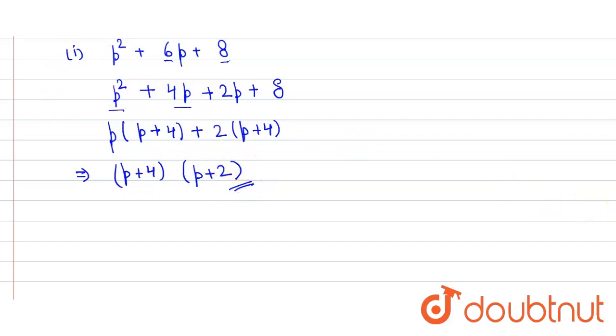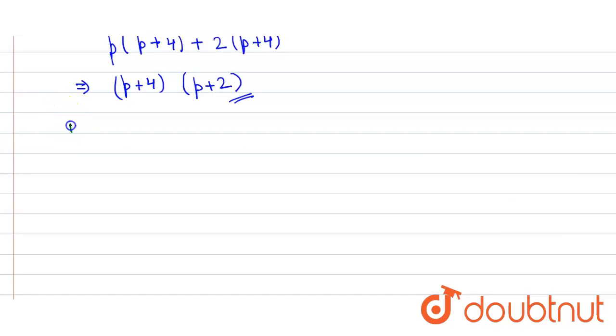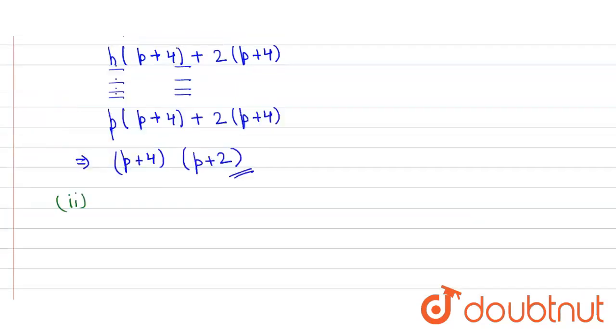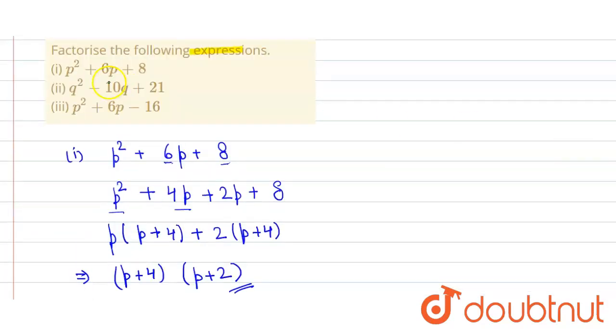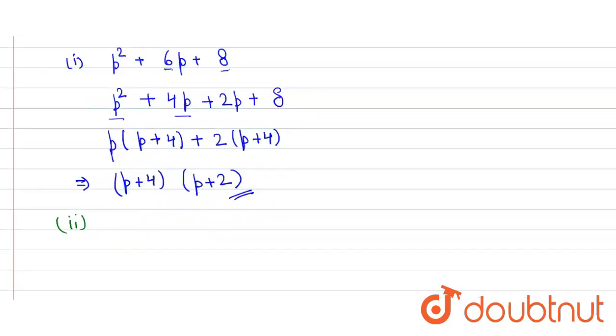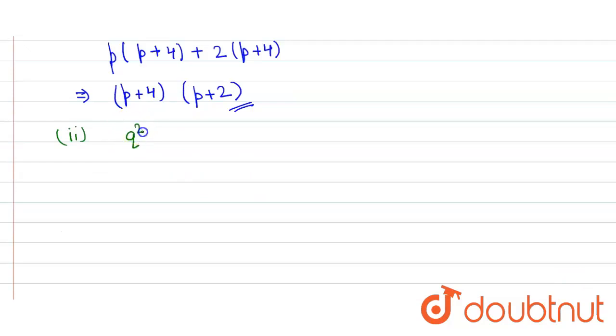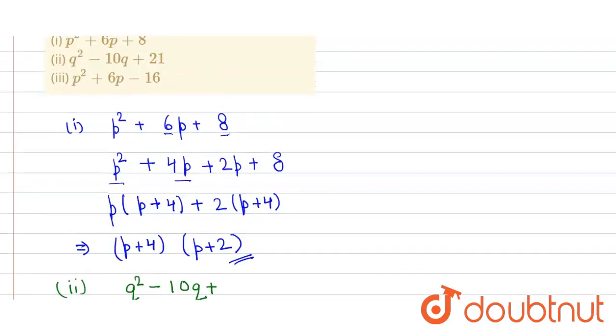We follow the same procedure in the other two parts. In the second one it is q² - 10q + 21.